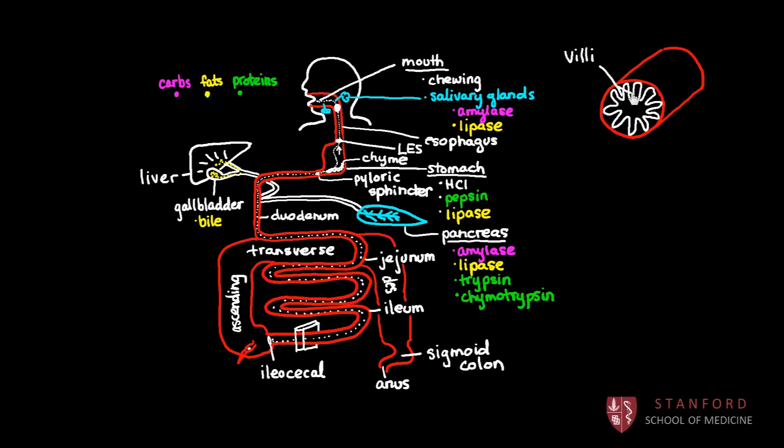And the villi, what they do is they increase the surface area for absorption of all of those important nutrients that are going to be found in the lumen. So the proteins, the fats, and the carbohydrates that are going to be passing through this lumen. And better yet, to further increase the surface area, there are these kind of small, they look like hair-like projections projecting off of the villi. And this is what we call the brush border. These are called microvilli or smaller villi. And the microvilli make up the brush border. And what that does is it further increases the surface area for absorption in the small intestine.